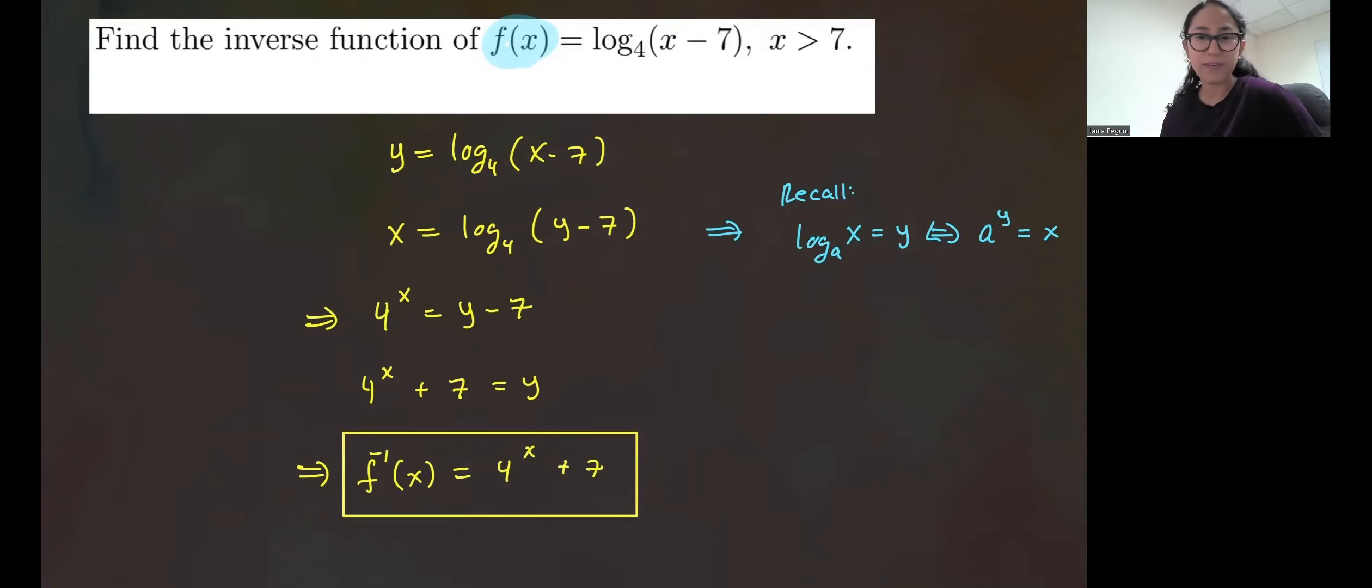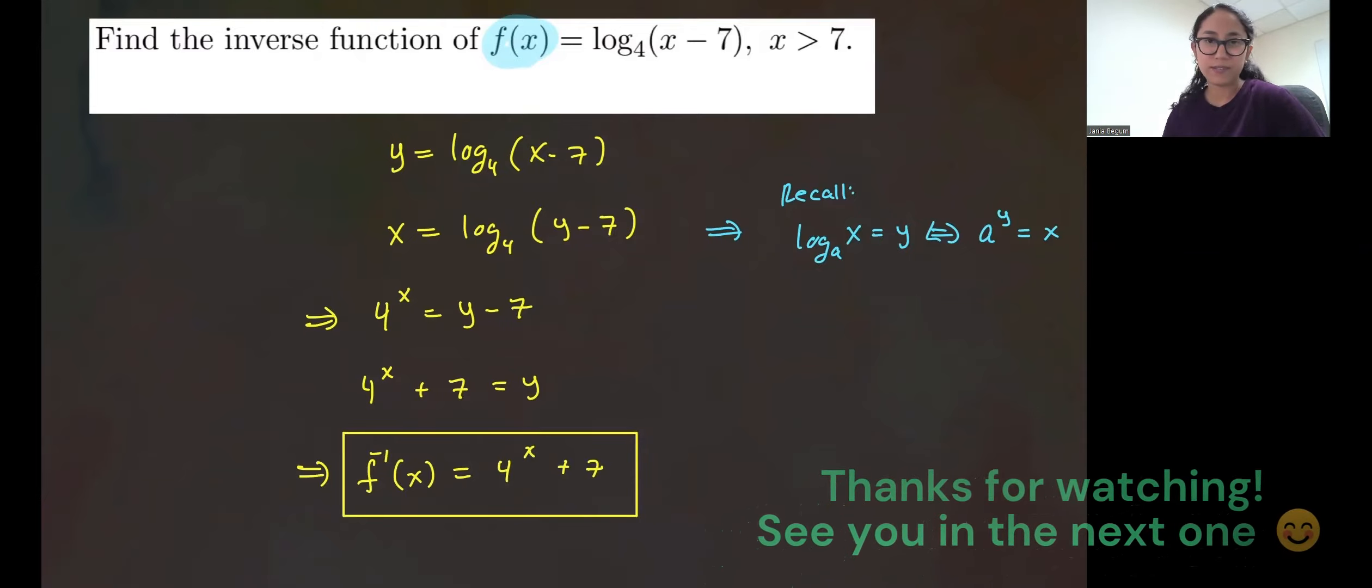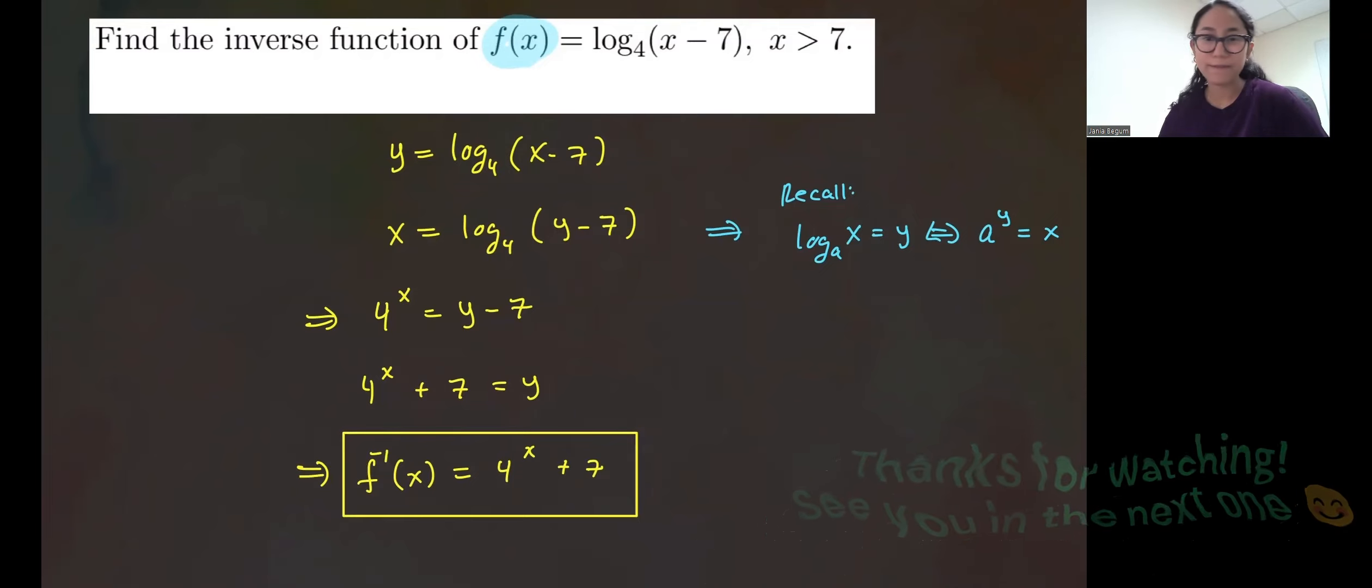Now if you try to graph this function, you'll see that they're both reflection of each other about the line y equals x. Okay, that's it. I hope this makes sense.